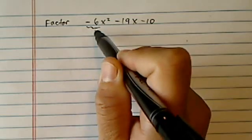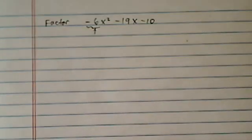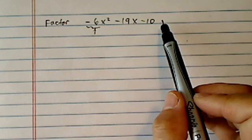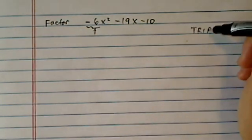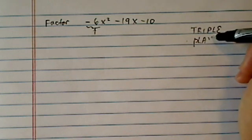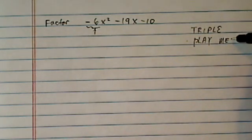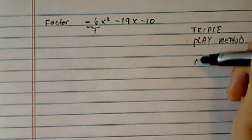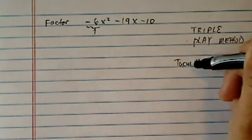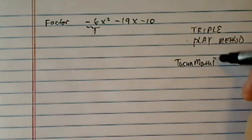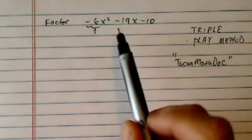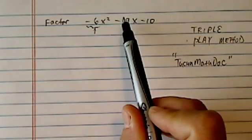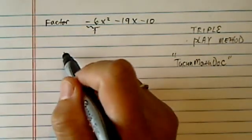The difficulty is the quadratic equation here does not have coefficient 1, which makes it a little more complicated. What I want to help you with on this clip is this method called the triple play method, and if you go onto my channel, it's Tucson Math Doc channel, there are a couple more worked out examples on factoring quadratics where the coefficient is not 1. Let's get started.